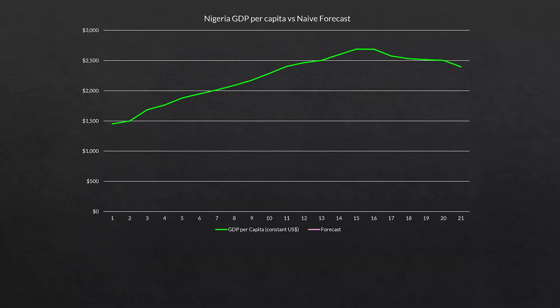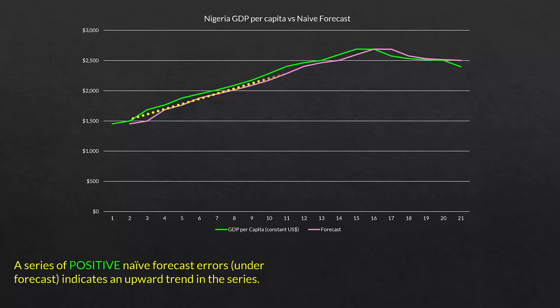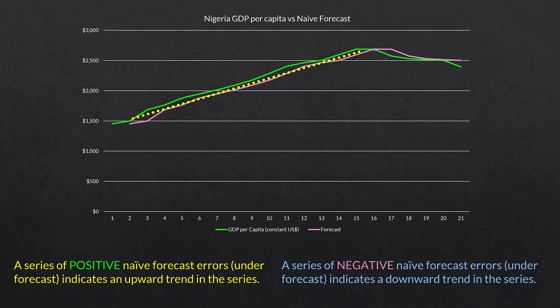Here is the Nigerian GDP per capita versus the naive forecast. The green line represents the actual values and the pink line represents the forecast values. You can see there's a gap in the first 13 or 14 years of this forecast where the actual was higher than the naive. Then on the right, the naive is higher than the actual. A series of positive naive forecast errors indicates an upward trend in the series because the forecast — just the actual slid over one period — cannot keep up with actual values when there is a trend. Conversely, a series of negative errors indicates a downward trend.